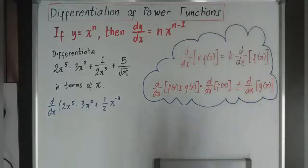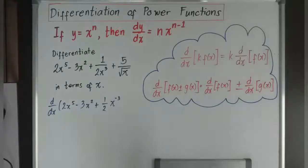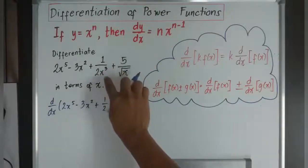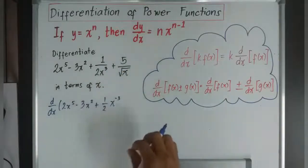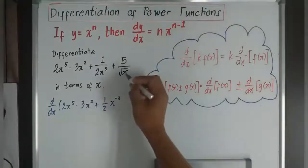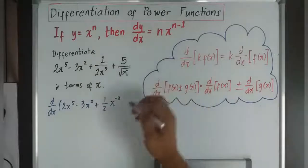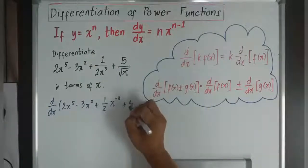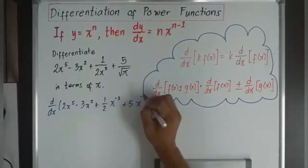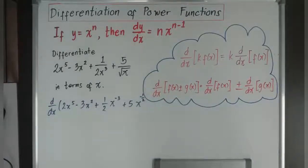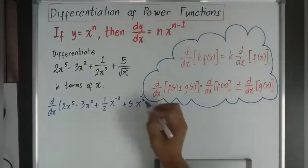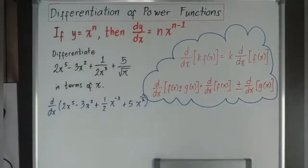Remember the law of indices: 1 over a to the power of n equals a to the power of negative n. And 5 over square root of x — since square root of x is x to the power of one half — brings up to become plus 5x to the power of negative one half. So this is the full function we are differentiating.